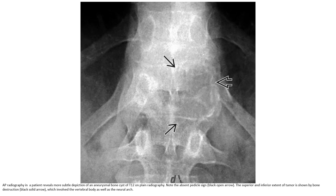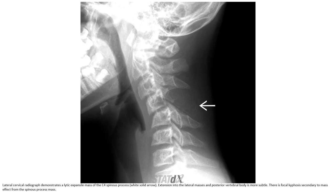An AP radiograph in a patient revealed a more subtle appearance of the aneurysmal bone cyst on plain radiograph. Note the absent cortical signs. The superior and inferior extent of the tumor is suggested by bone destruction, which involves the vertebral body as far as the neural arch. A lateral cervical radiograph demonstrates an elliptic expansile mass of the spinous process.